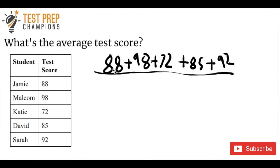So we've got 88, that's 1, 98, that's 2, 72, that's 3, 85, that's 4, 92, that's 5. So we've got five numbers here. Okay, so again, just add up all the numbers in the data set, divide by the total number of numbers. We've got five numbers in our data set.